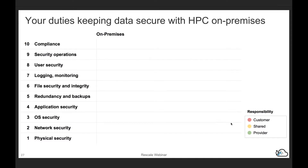To break it down, we want a way to measure what duties you have when running on-premises, with cloud providers, and with Rescale. We've come up with a three-color-coded system: red means you have to manage it yourself; yellow means it's a shared responsibility model, where one party handles enforcement and the other handles configuration; and green means it's already managed for you.